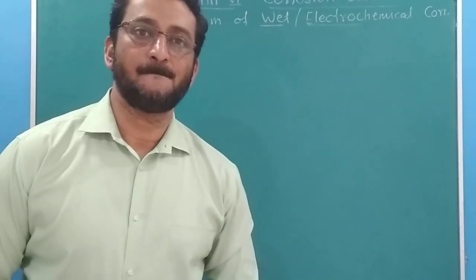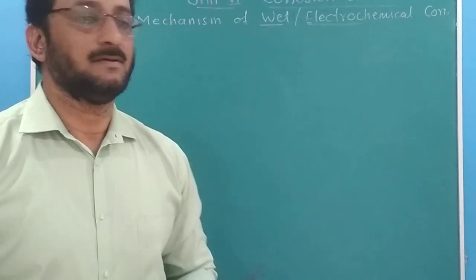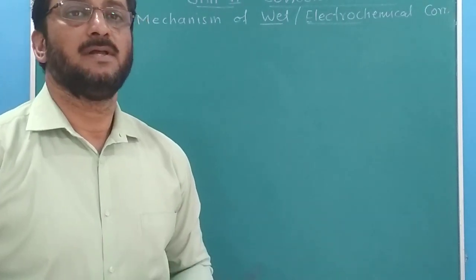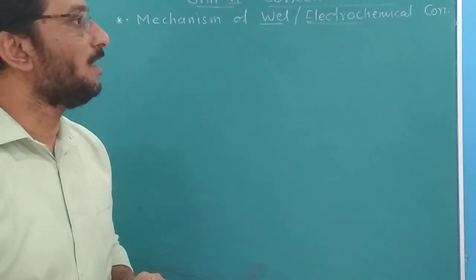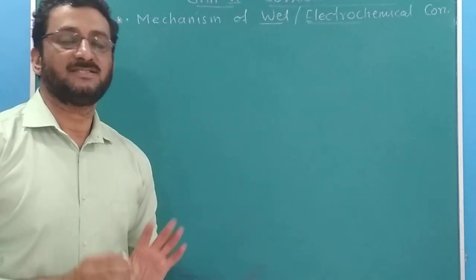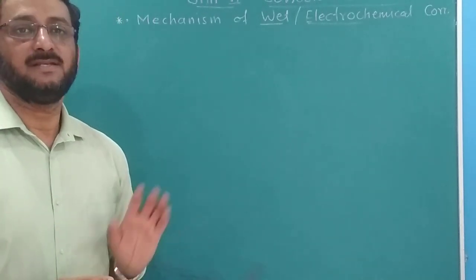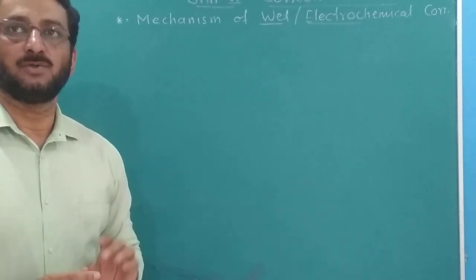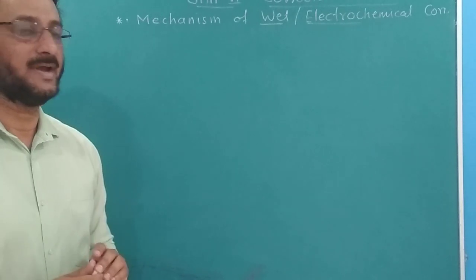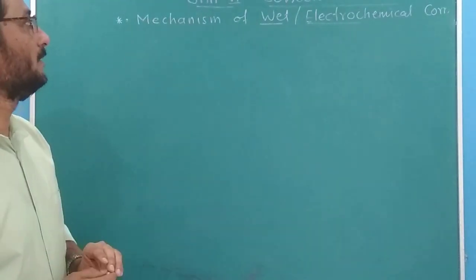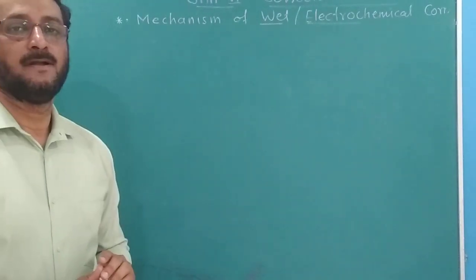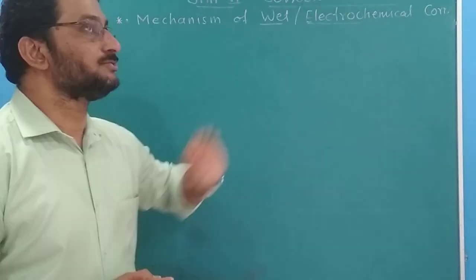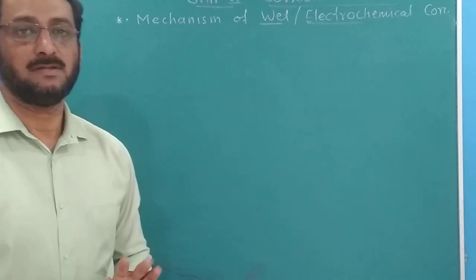Hello dear friends, today we will start with the next topic of corrosion — wet corrosion, or electrochemical corrosion. In the last video we have seen dry corrosion, its mechanism, the Pilling-Bedworth rule and related topics. Now we go to this part: wet corrosion and the mechanism of wet corrosion. This wet corrosion is also called electrochemical corrosion.